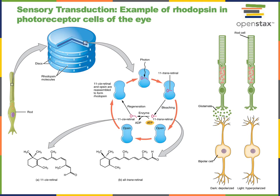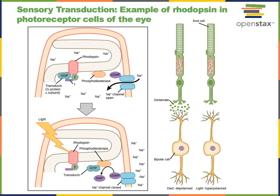This closing of the ion channel decreases the release of the neurotransmitter glutamate from the photoreceptor cell to the dendrites of the bipolar cell in the retina of the eye. The sensory transduction mechanism in photoreceptors involves light activating the rhodopsin G-protein coupled receptor protein. When rhodopsin is activated, it has a G-protein subunit known as transducin that will activate an enzyme known as phosphodiesterase. Phosphodiesterase catalyzes a chemical reaction that breaks down cyclic guanosine monophosphate to form guanosine monophosphate.